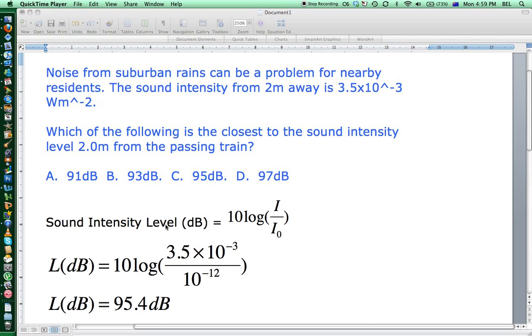Here's the formula for decibels: 10 log observed intensity over threshold intensity. So if we put our values in, 3.5×10^-3 over the threshold intensity 10^-12 (it's the lowest intensity sound that a human ear can hear), we get 95.4 decibels coming out. So the best answer there would be C.